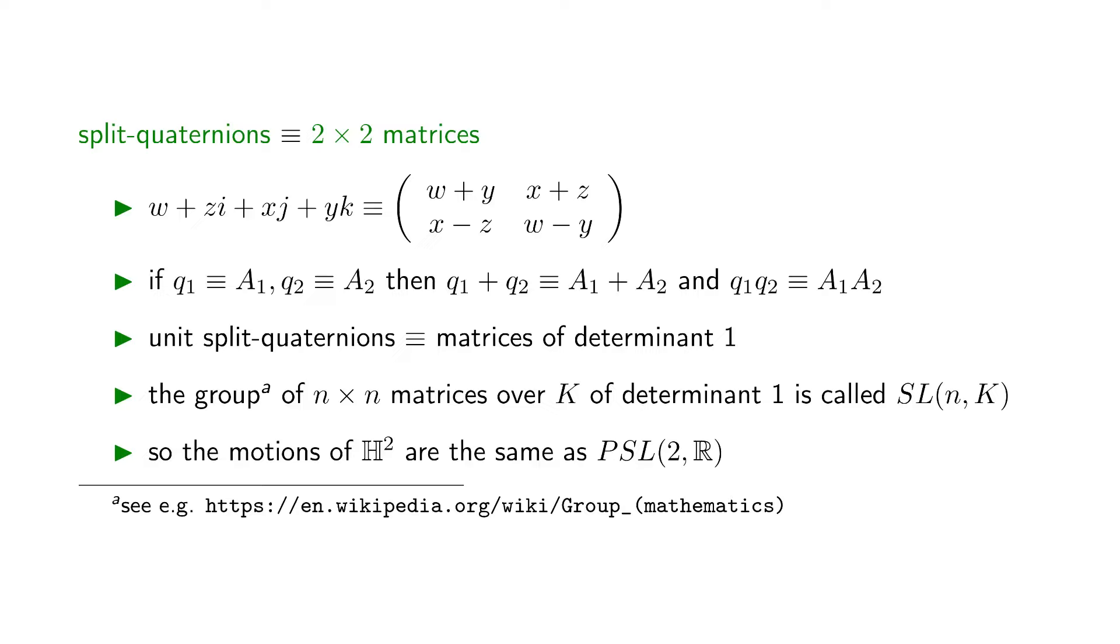We are getting close to explaining the strange name of this episode's geometry. Recall that SL(2,R) is the group of 2 times 2 matrices with determinants 1. The split quaternions have the same structure as 2 times 2 matrices, as shown in the slide. The unit split quaternions correspond to 2 times 2 matrices with determinant 1.